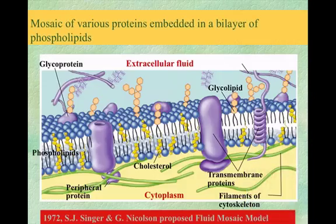When we talk about the fluid mosaic model, we have to give credit to Singer and Nicholson, who in 1972 were the first ones to say that the plasma membrane is just a mosaic of various proteins embedded in a bilayer of phospholipid, as shown in this picture.